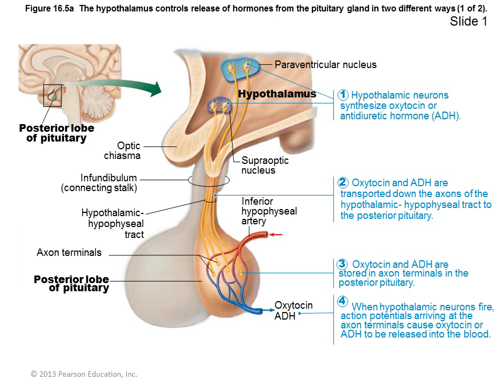The anterior pituitary produces different hormones. However, the posterior pituitary does not secrete — it only stores oxytocin and antidiuretic hormone, which are made by neurons and stored and released into the anterior hypophysial artery.